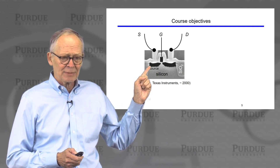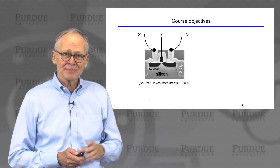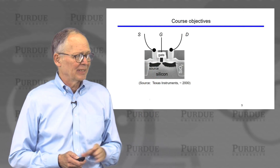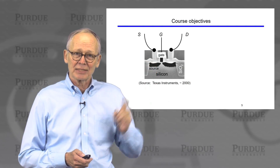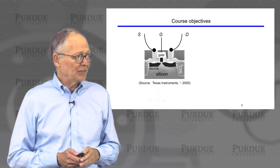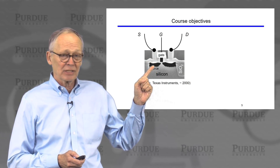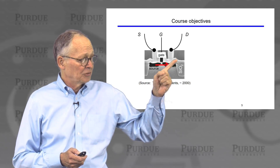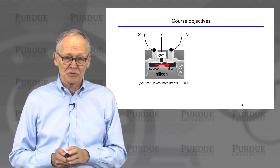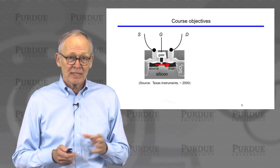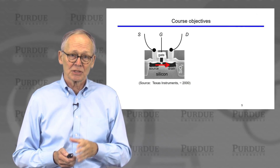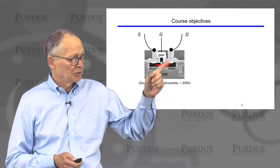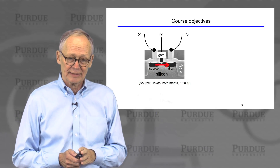There's a terminal we label the source — that's a source of electrons. There's a terminal we label the gate. If we apply the correct voltage to the gate terminal, it allows electrons to flow out of the source, across the channel, and into this third region that we label the drain. That's how the MOSFET works — we control the flow of electrons from one terminal to the other with a third terminal in the middle.